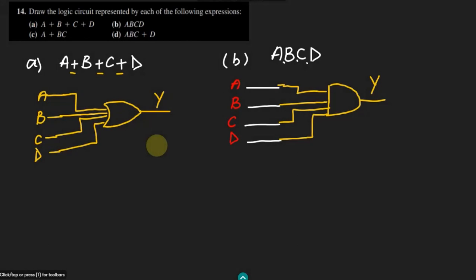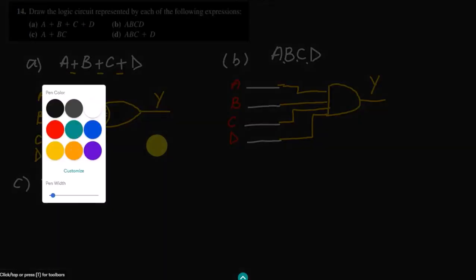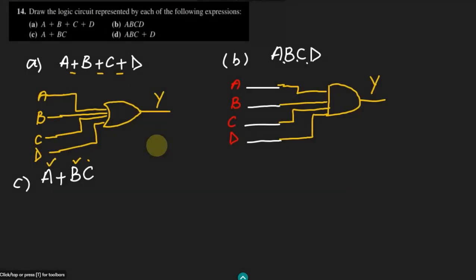For part c we have a plus bc. Here we can see three inputs are involved: a, b, and c. This a is added with the product of b and c. We first have to perform the bc operation, and after that it will be added with a. Multiplication is always performed before addition.